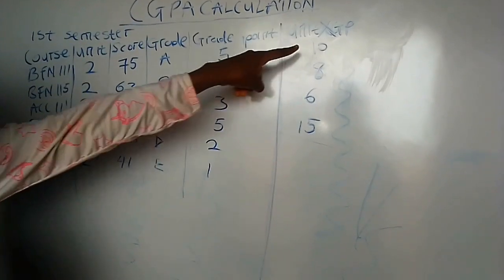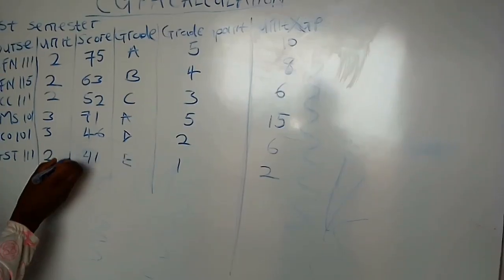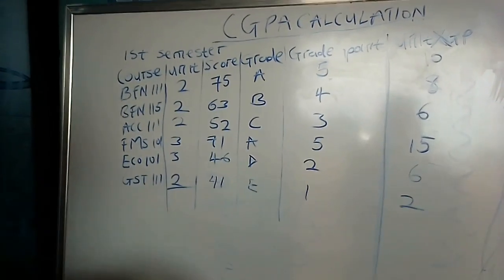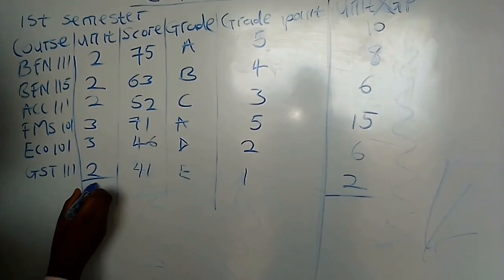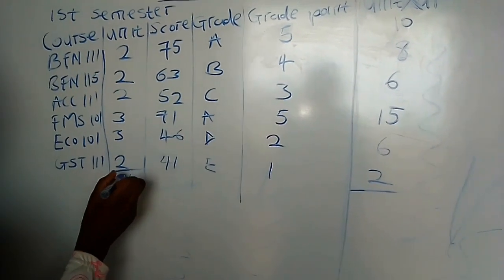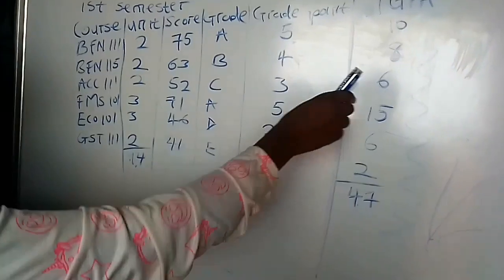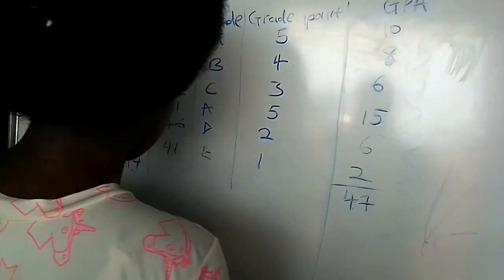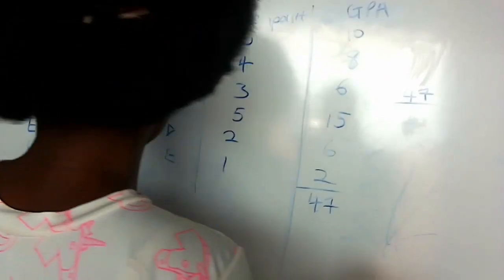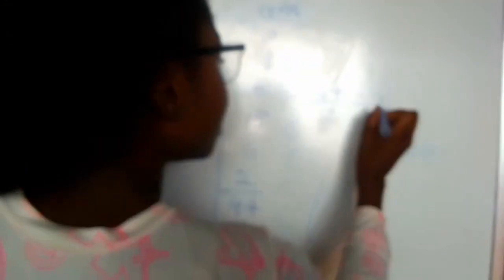Notice that a course with 2 units and grade A gives 10, but a course with 3 units and grade A gives 15 — that's why you must do well in courses with higher units. We add up all the grade points to get 47, and the total units come to 14 for this semester. To calculate the GPA, we divide the total grade points by the total units: 47 divided by 14 gives us 3.35. So this person's GPA for the semester is 3.35.